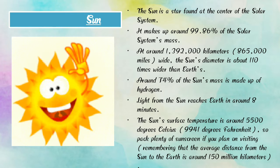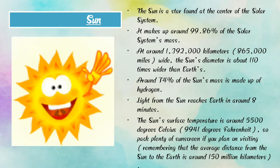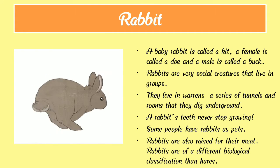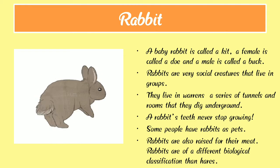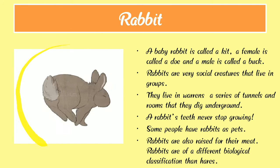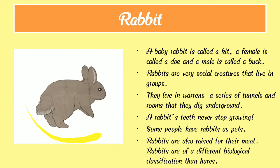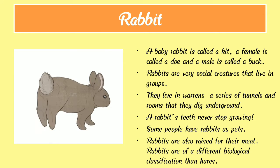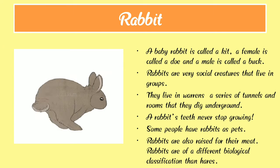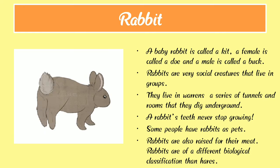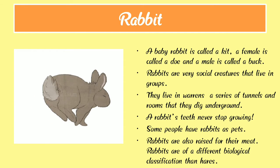Now we are going to learn the next slide, and it's a rabbit. R-A-B-B-I-T. Rabbit. Here we can see a photograph of a rabbit. Rabbits eat carrots. A baby rabbit is called a kit, a female is called a doe, and a male is called a buck.